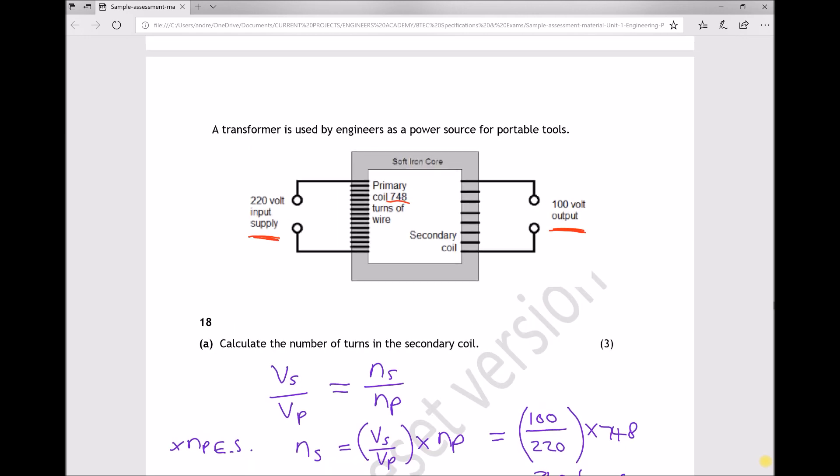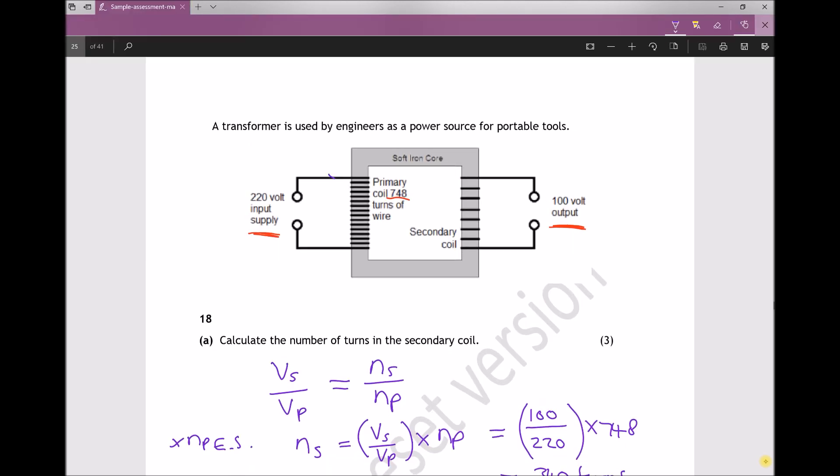If we consider what we're trying to do here: we want to pass a current through the primary windings, and as a result we want that to induce a current in the secondary windings.